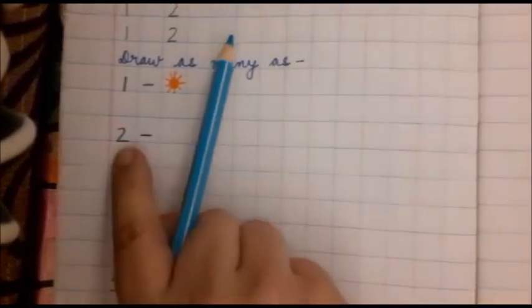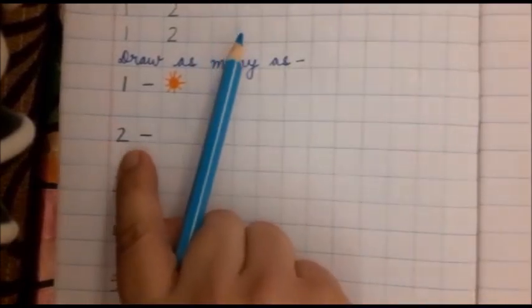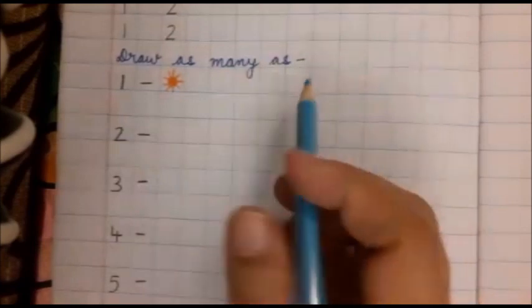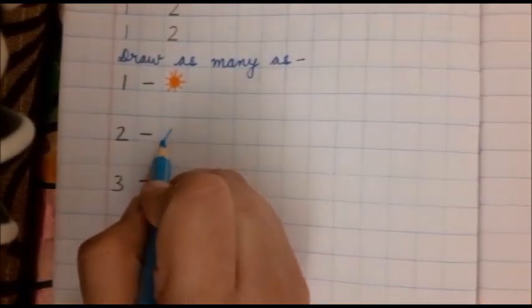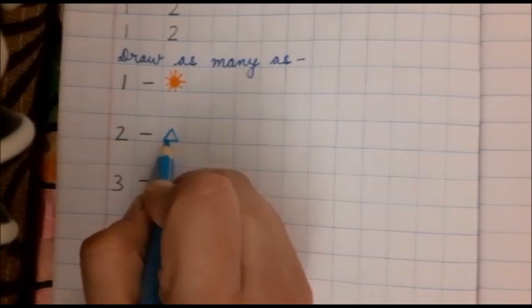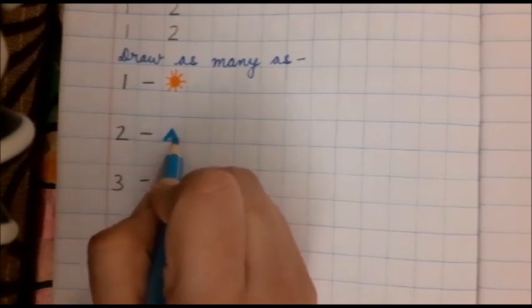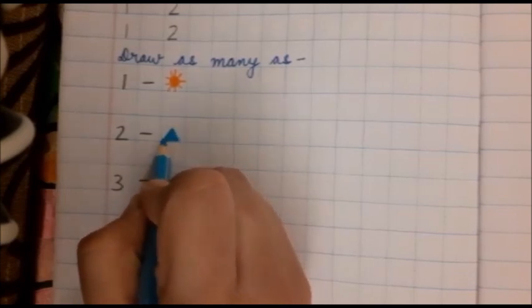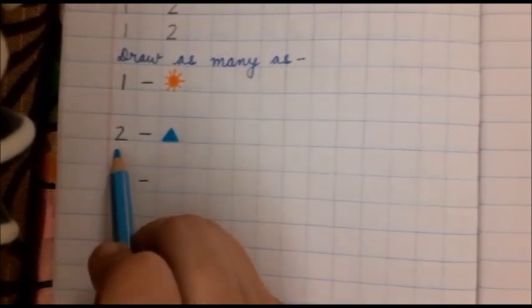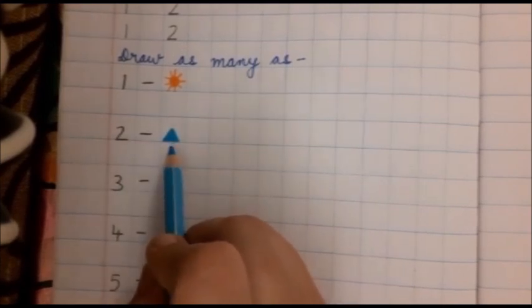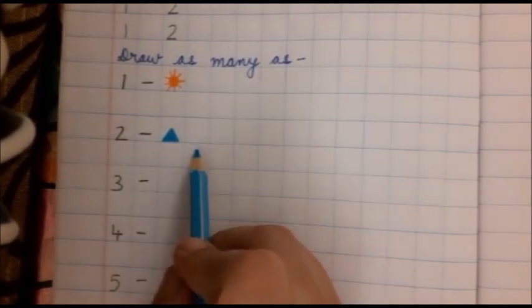Now, two. Next number is two. Just see what Anubha ma'am is going to draw. Anubha ma'am has made a triangle. But what number is this? Two. So, will I make just one triangle or two triangles?